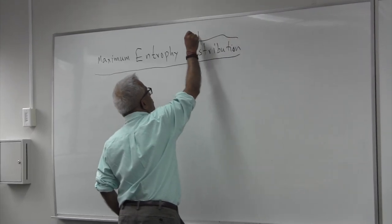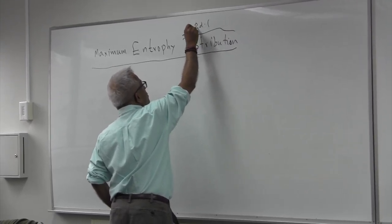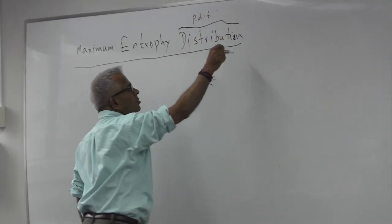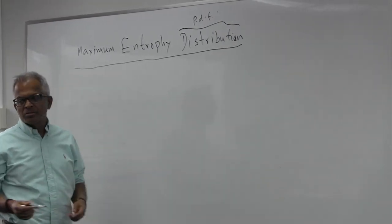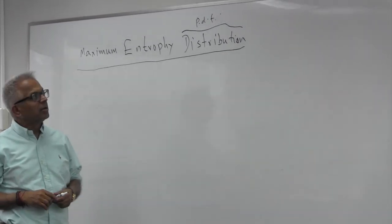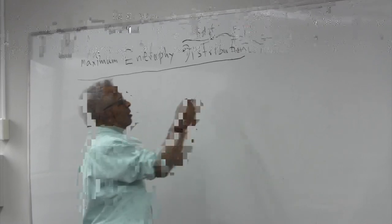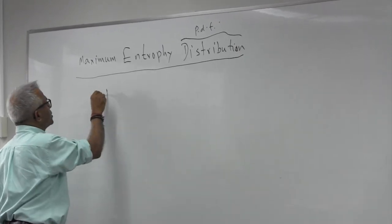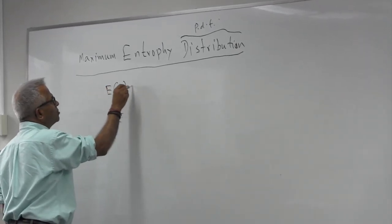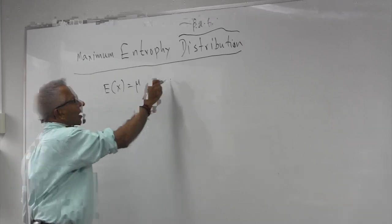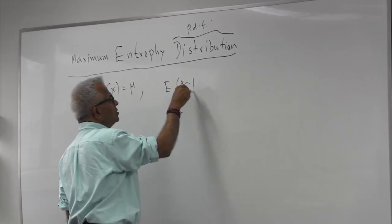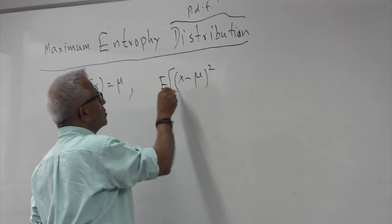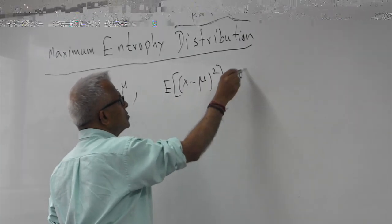We are trying to find out the PDF, probability density function, subject to some conditions. Here the subject to expected value of x is mu and expected value of x squared is sigma squared.